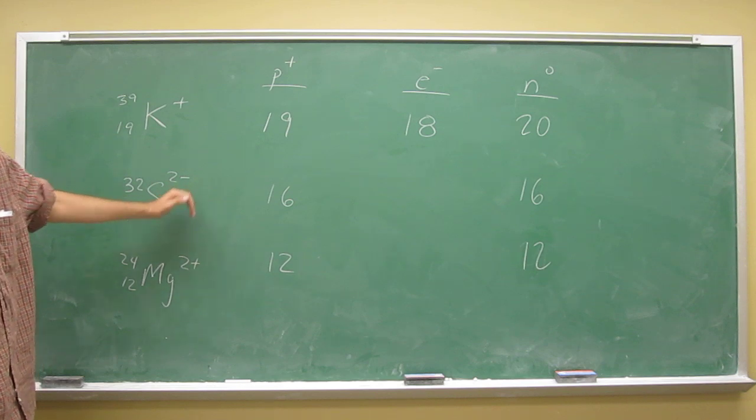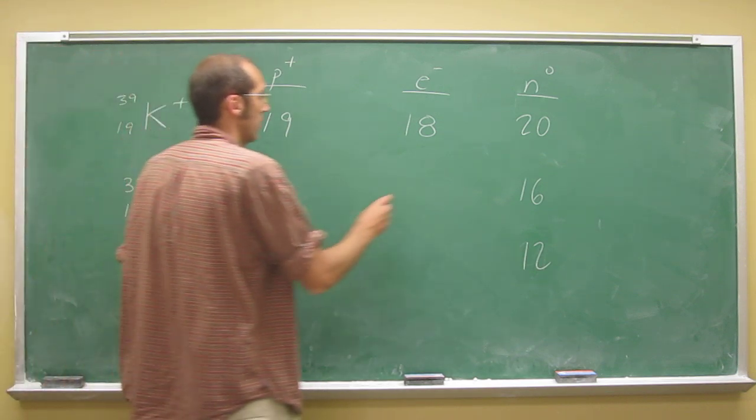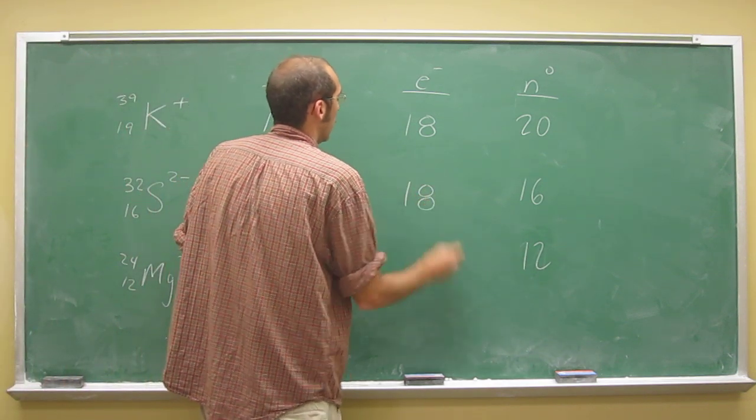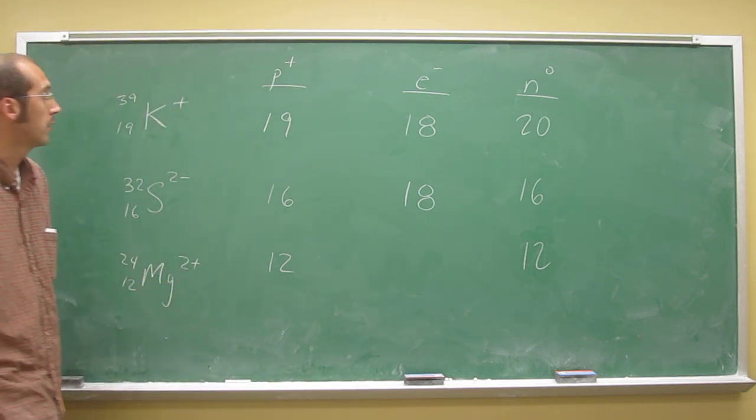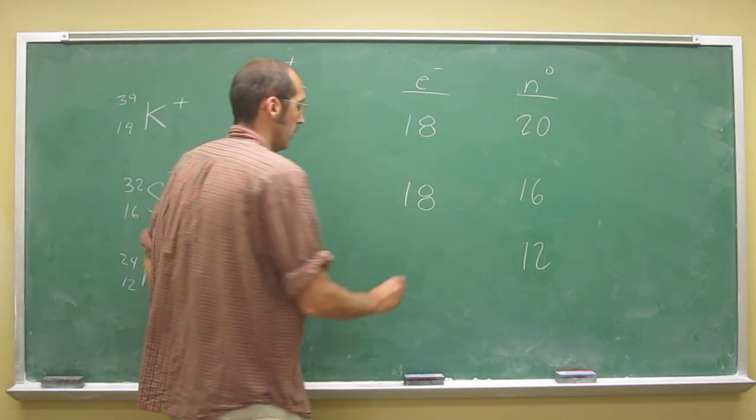In this case, since it's a negative two, it's gained two electrons, so it's also 18. And this one has lost two electrons, so it's 10.